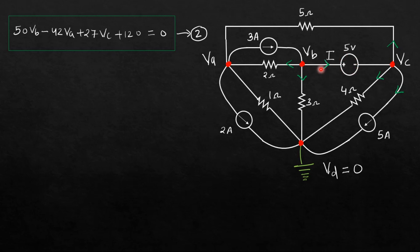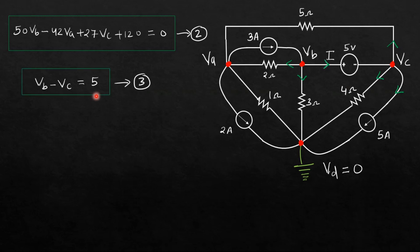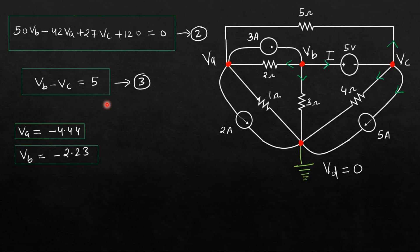The third equation comes from the voltage source between nodes B and C. Since VB is at higher potential by 5V than VC, we have VB minus VC equals 5. This is equation three. Now we have three equations and three unknowns. Putting them into the calculator gives Va equals minus 4.44V, Vb equals minus 2.23V, and Vc equals minus 7.23V. In an exam you will typically encounter at most three equations. Once you find the node voltages, you can calculate any branch current — for example, VB minus 0 divided by 3, or VA minus VB divided by 2, or VA minus 0 divided by 1. This was all about nodal analysis.